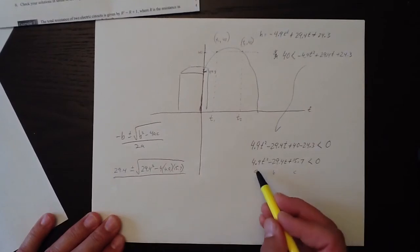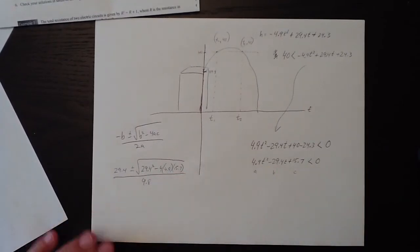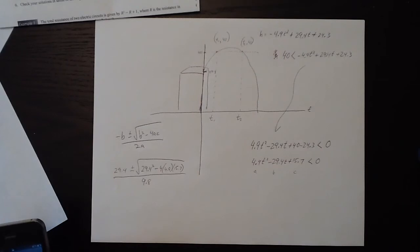All over 2 times a. I can do that in my head. 2 times 4.9 is 9.8. So for that of course we need our calculator because it's going to get messy.